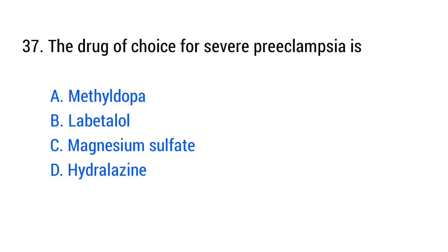Question number 37. The drug of choice for severe preeclampsia is? The right answer is option C, magnesium sulfate.